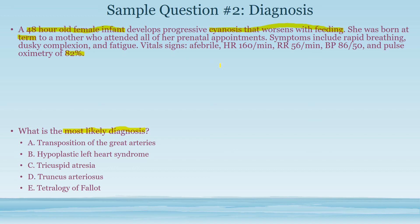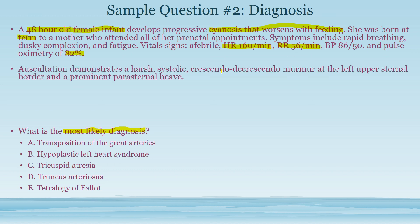The heart rate is within normal limits, but the respiratory rate is very high and pulse ox is very low. The main concern is the high respiratory rate and rapid breathing. Auscultation reveals a harsh systolic crescendo-decrescendo murmur at the left upper sternal border and a prominent parasternal heave. A crescendo-decrescendo murmur suggests pulmonic stenosis, not a flow murmur, indicating stenosis is present. Prostaglandin E1 infusion is provided to keep the ductus arteriosus open, and symptoms improve, though cyanosis persists.